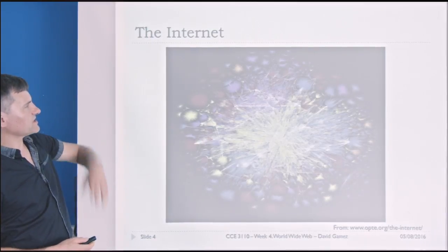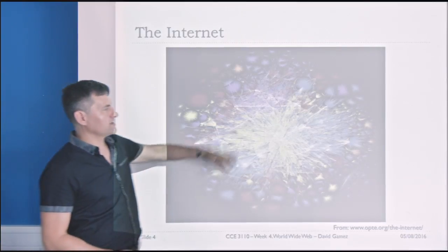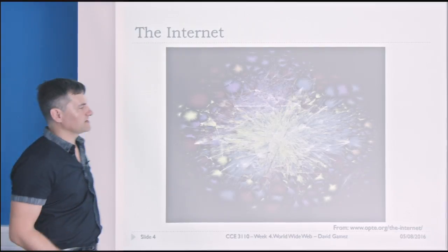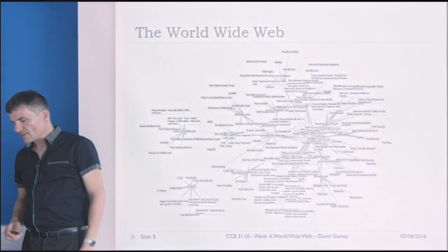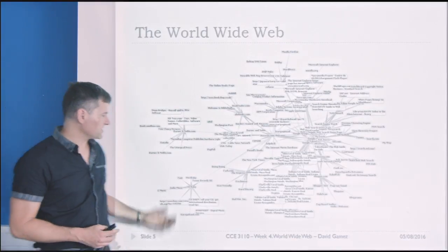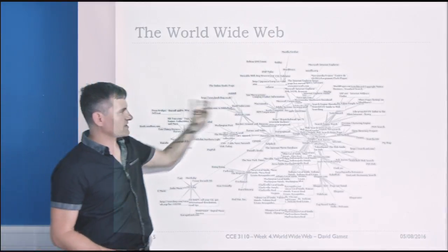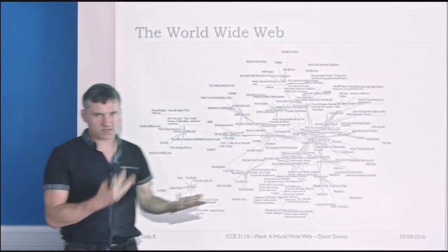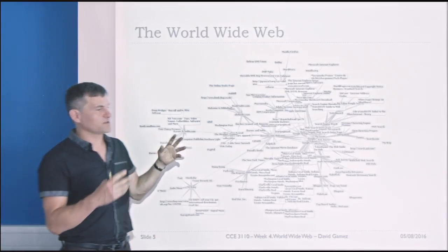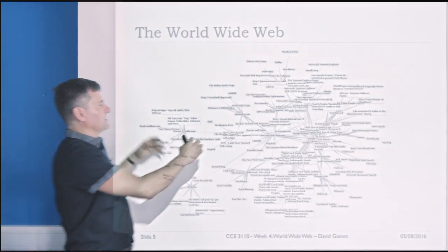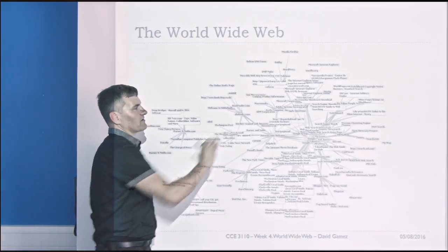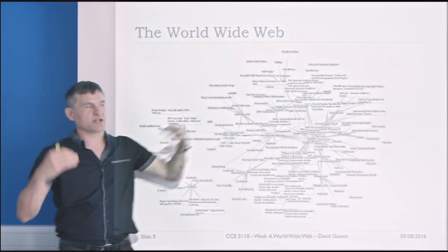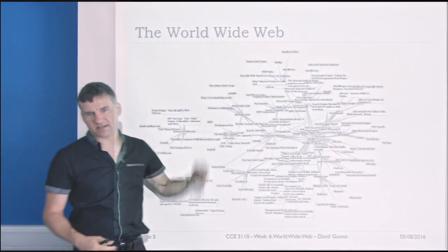Here we have a nice visualization of the Internet — all the submarine cables going across the Atlantic, all the different bits of wire and so on. And here we have the World Wide Web, which is a set of documents with hyperlinks linking to each other. We're using the DNS system to connect the human readable URLs — the locations of these documents — to actual IP addresses that enable them to be downloaded and accessed.